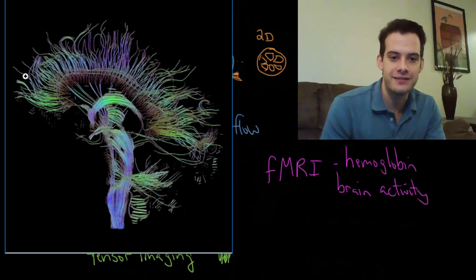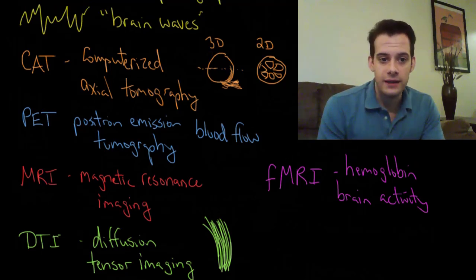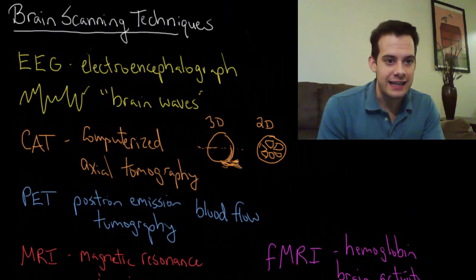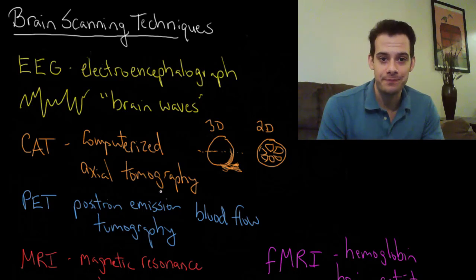Okay so that's DTI, diffusion tensor imaging. Okay so those are all of the brain scanning and imaging techniques that you should be familiar with. I hope you found this helpful. If so please like the video and subscribe to the channel for more. Thanks for watching.